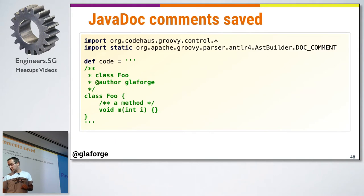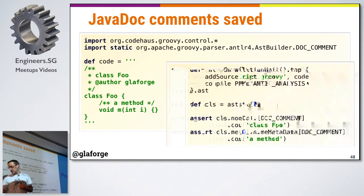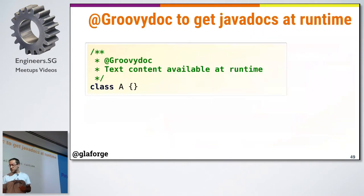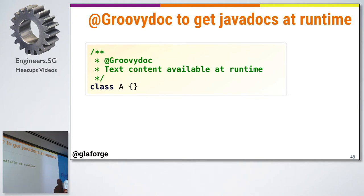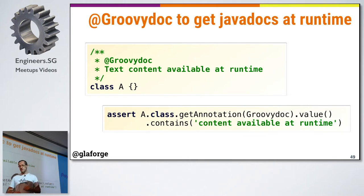Javadoc comments were previously not kept in the AST, so code transformations couldn't access them. Now we've added access to Javadoc content in the AST. There's also a special @Groovydoc annotation: if you want the Groovy compiler to store the Javadoc content in the class files so it's available via reflection, you can annotate with @Groovydoc.